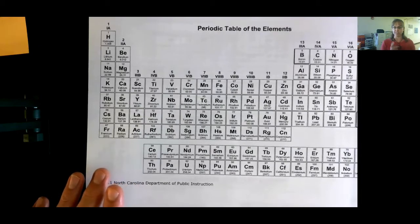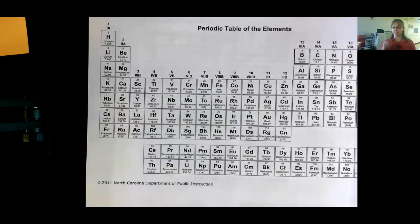When it comes to groups, columns, or families - those are the up and down vertical columns. Remember, columns on a building go up and down.